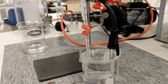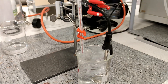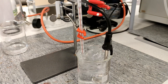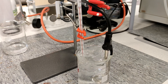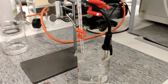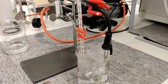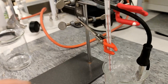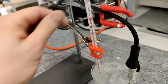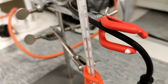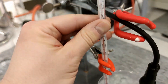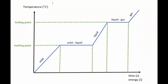Another essential demonstration: we are heating water until it starts to boil. We can see that the temperature of boiling water remains constant all the time, here around 95 Celsius, because the room has pressure below atmospheric pressure. In this diagram we see that when the state of matter is changing, the temperature is constant.